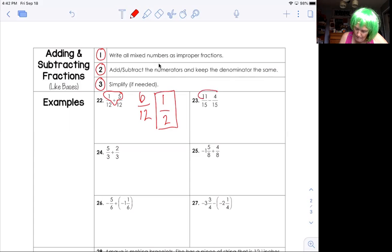Next one, eleven minus four is going to give me seven over fifteen. Keep the denominator the same. I can't reduce, so there's my answer. Loving it.